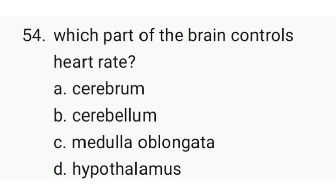Which part of the brain controls heart rate? The correct option is C — medulla.